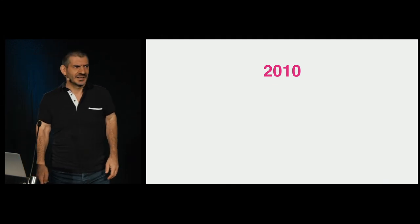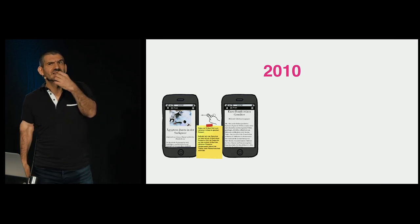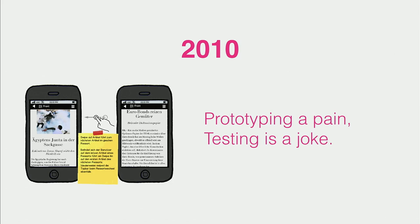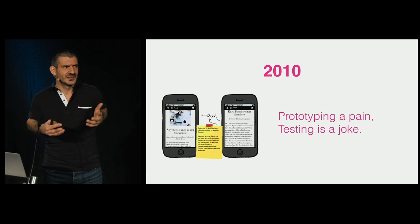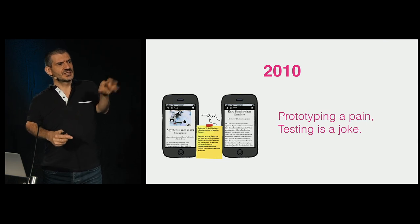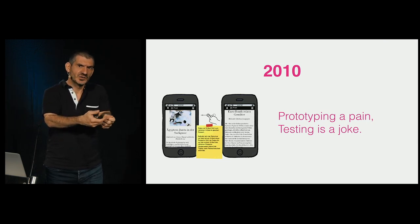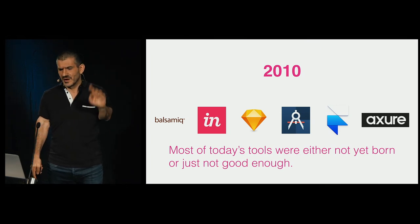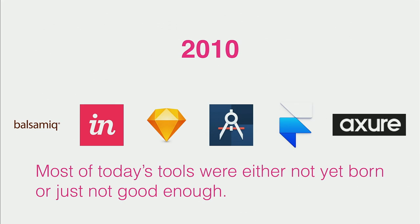I want to begin the story going back to 2010. That's the time when we did prototypes mostly in a wireframe-y way, using tools like Balsamiq. And especially for mobile, prototyping was a pain. Testing was a complete joke — you couldn't test things on mobile. You had to either show the screens on a desktop or print them out and stick them on cardboard. And it was just no real experience. At that time, all these tools that you would use today were either not even around, just about to be invented, or just not good enough.